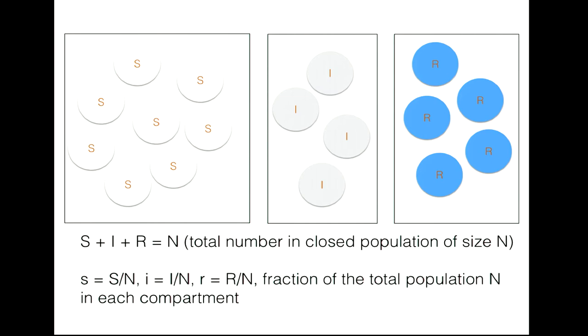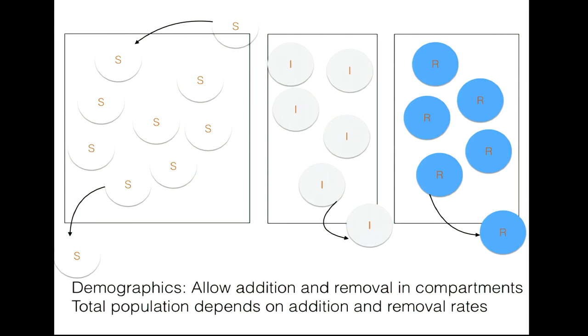We can allow for demographics in these models—new susceptibles can be born into the S compartment, or susceptibles can be removed through death. You could also have immigration increasing numbers in any compartment; for example, in a large city where population increases by thousands per day, immigration contributes to the pool of susceptible, infected, or recovered individuals. Additional removal rates and entry rates must then be specified, adding complexity to the model.